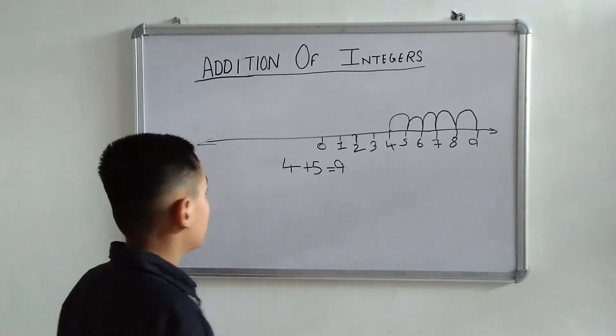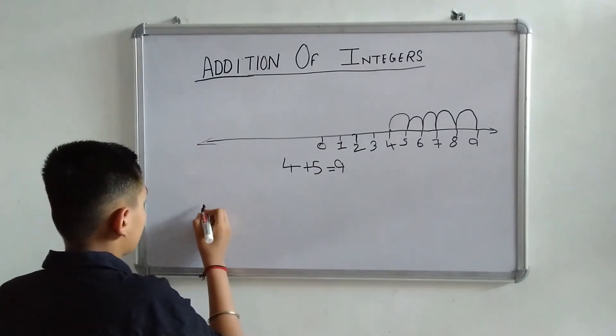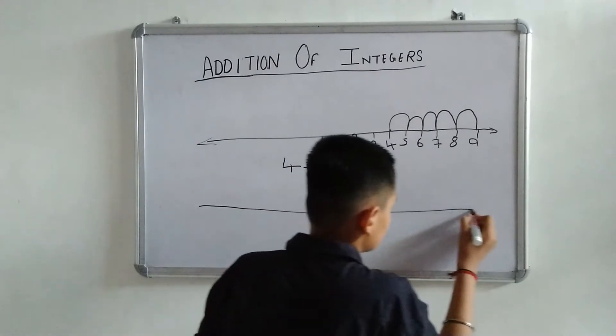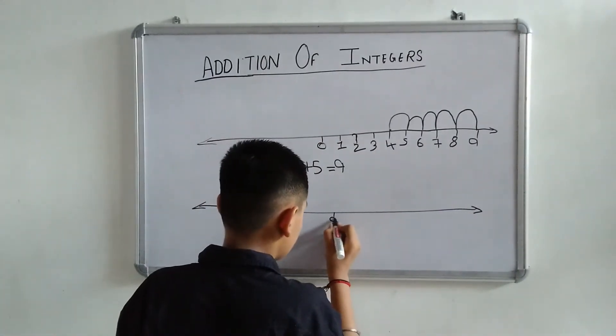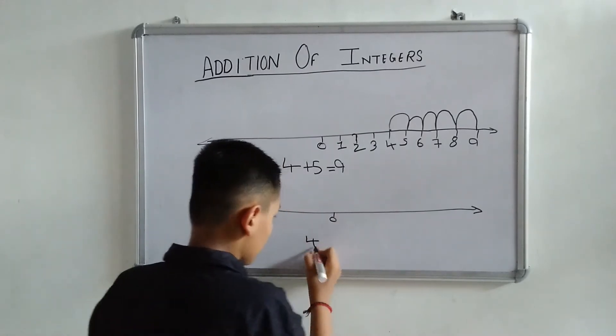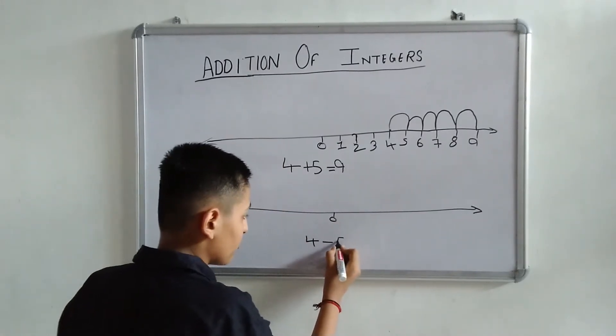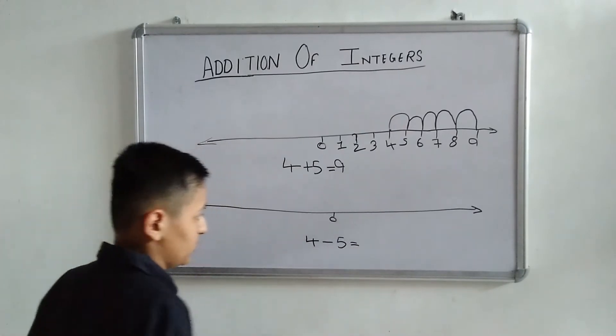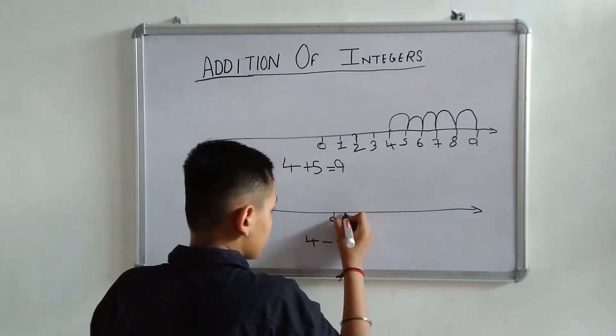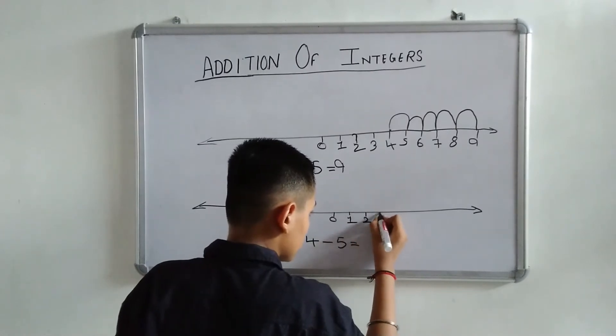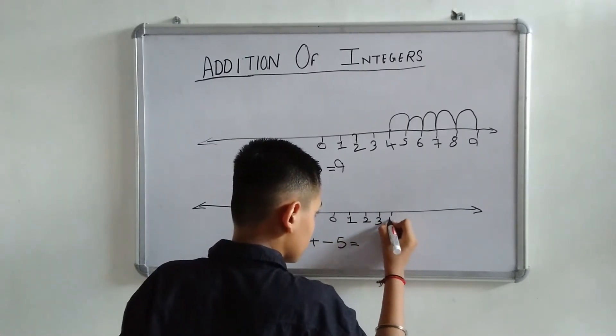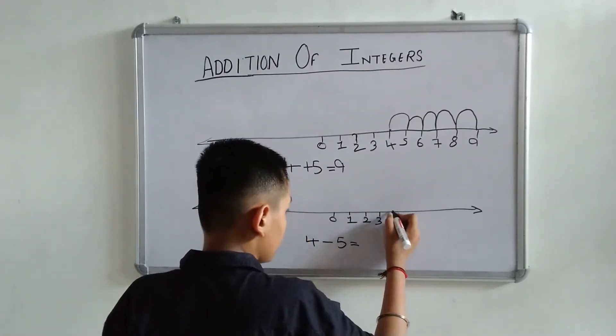Okay! Let's take another example like 0, 4 minus 5 equals 3. First, mark a point named 4. Okay! This is our point 4.